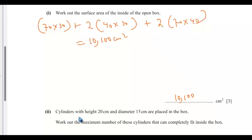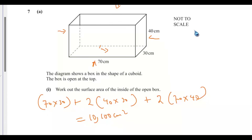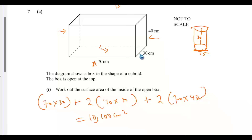Remember, we now have two cylinders with height 20 centimeters and diameter 15 centimeters placed in the box. Work out the maximum number of these cylinders that can completely fit inside the box. The cylinder has height 20 and diameter 15. Here is a rough sketch of the cylinder: height 20, diameter 15.